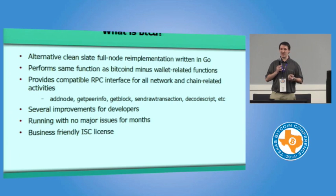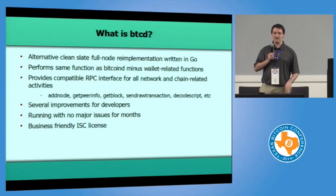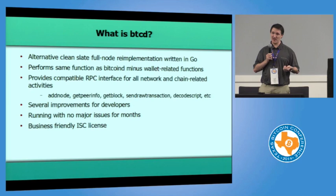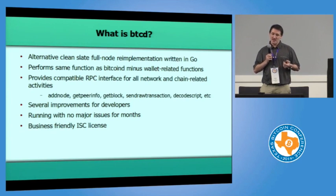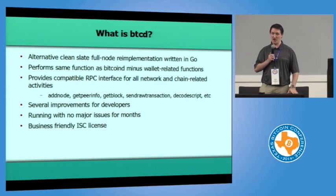BTCD is a completely new, clean-slate full node implementation. It's essentially a drop-in replacement for Bitcoin D. It supports everything that Bitcoin D does, minus mining, which is coming soon. It also provides a compatible RPC interface, so existing solutions that make RPC calls into Bitcoin D will work with BTCD too. Examples include get peer info, add node, sending raw transactions, and decoding scripts. Complete compatibility.